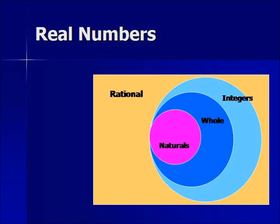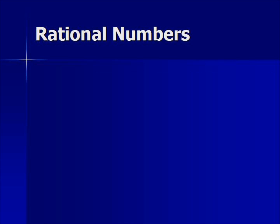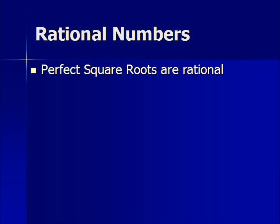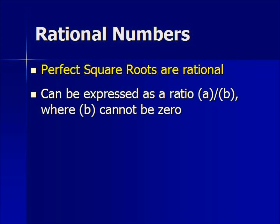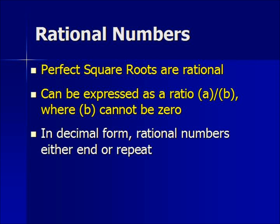Let's review everything. We have all real numbers, and rational numbers are a part of all real numbers. You can see the subsets that fit inside the rational definition. For terms that are not subsets, we understand that perfect square roots are rational; rational numbers can be expressed as a ratio A over B where B cannot be 0; and in decimal form, rational numbers end or they repeat.